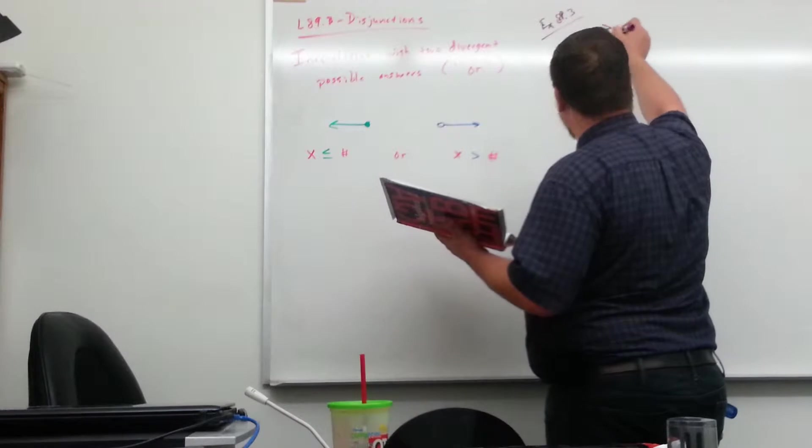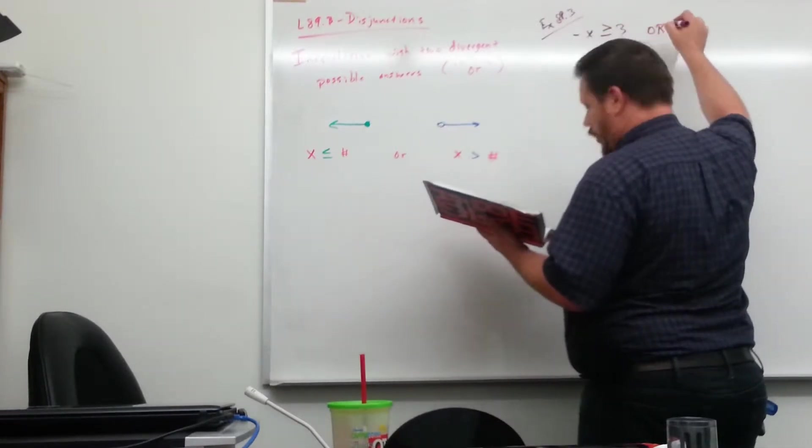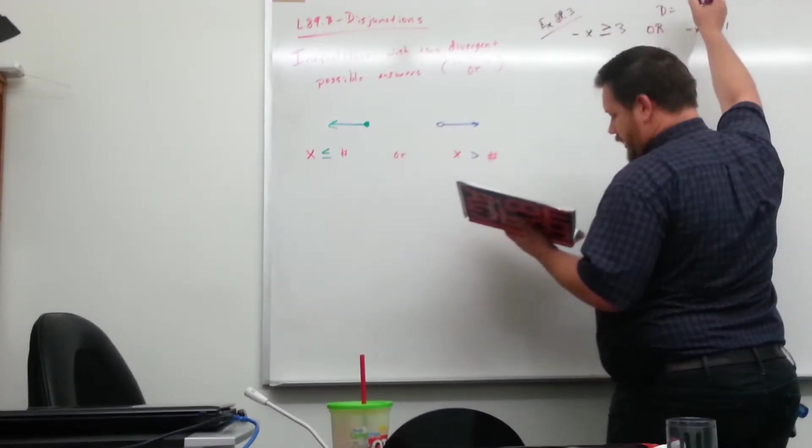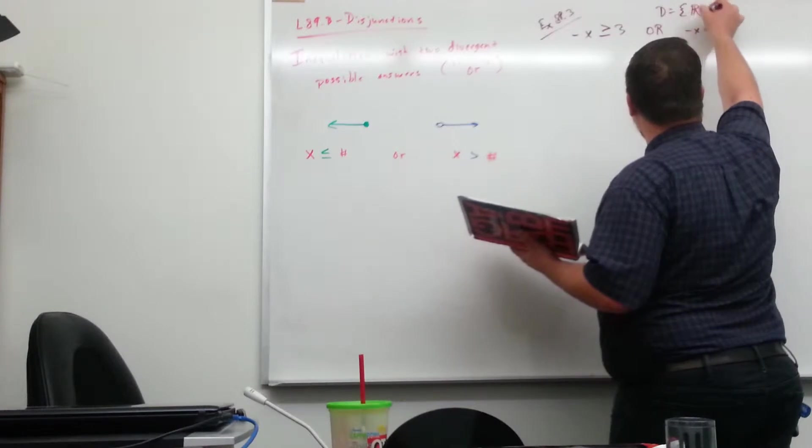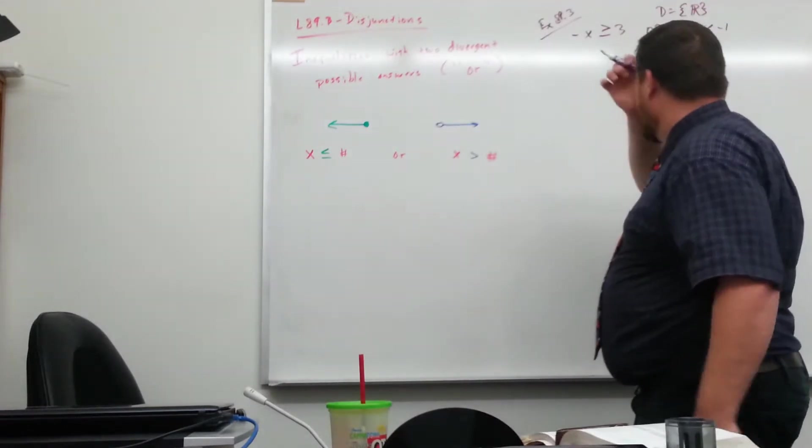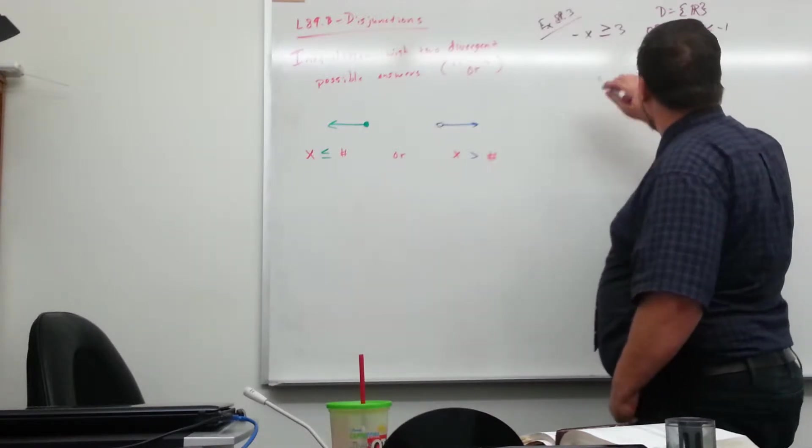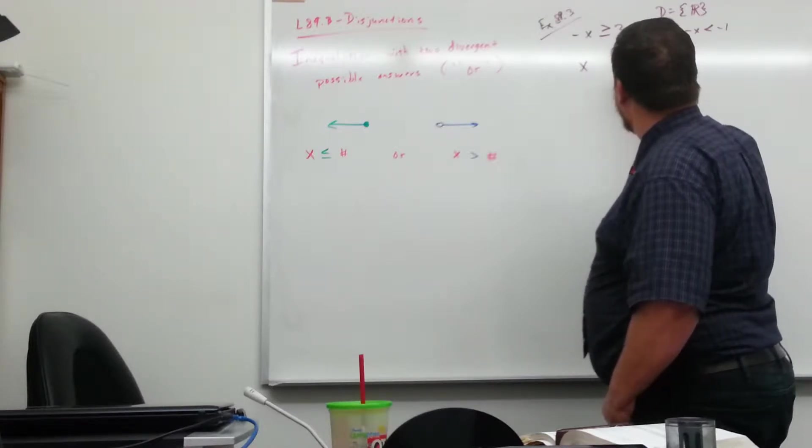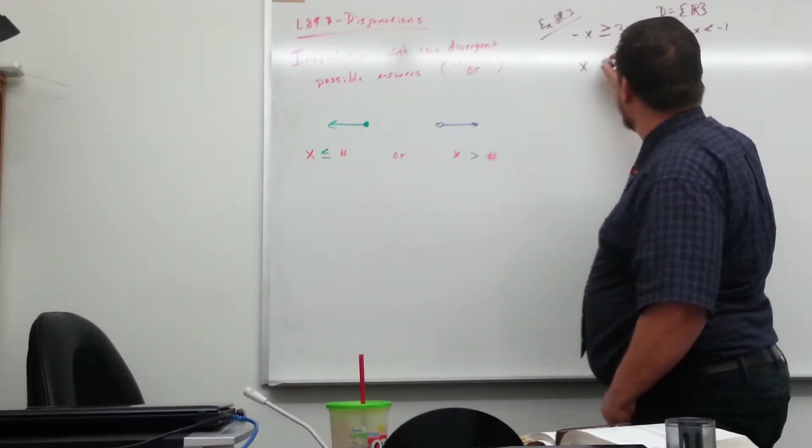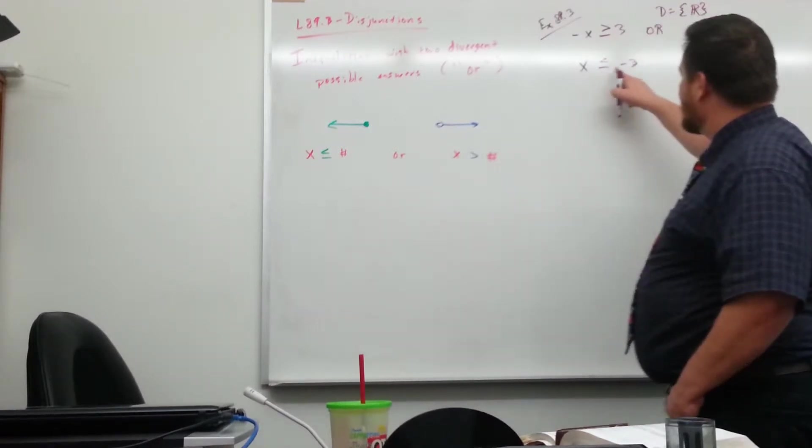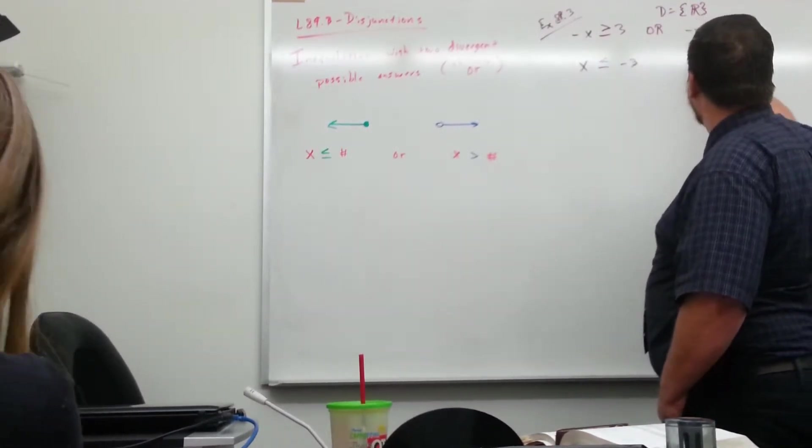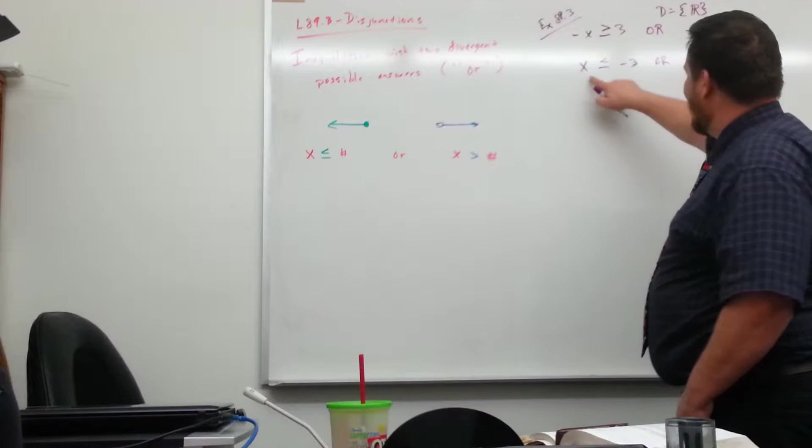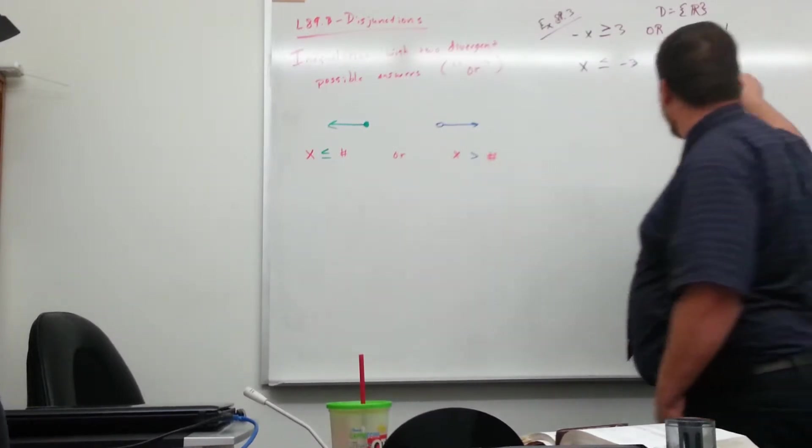Negative x is greater than or equal to 3, or negative x could be less than negative 1, and our domain is going to be real. So if it says or, it's a disjunction. Yes. So let's get our things going here. Multiply both sides by negative 1. And when you multiply both sides by negative, you have to change the direction of this one. So x has to be less than negative 3. Or do the same thing here, multiply both sides by negative, you've got to change the direction there. So x has to be less than or equal to negative 3, or it could be greater than 1.